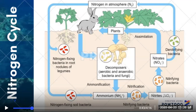Then the animals can eat the plants, and that nitrogen passes onto the animals so that they can also make proteins and nucleic acids. Now, when plants and animals decompose, that nitrogen will return to the soil. In order for that nitrogen to get back into the atmosphere, there's a type of bacteria called denitrifying bacteria that will change the nitrates back into a gas form — N₂ — to return to the atmosphere.